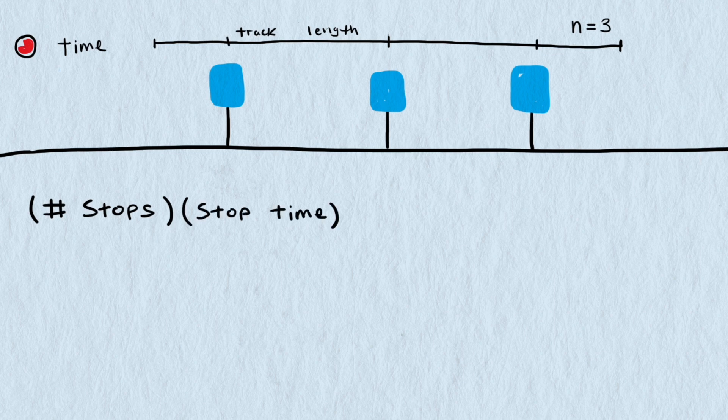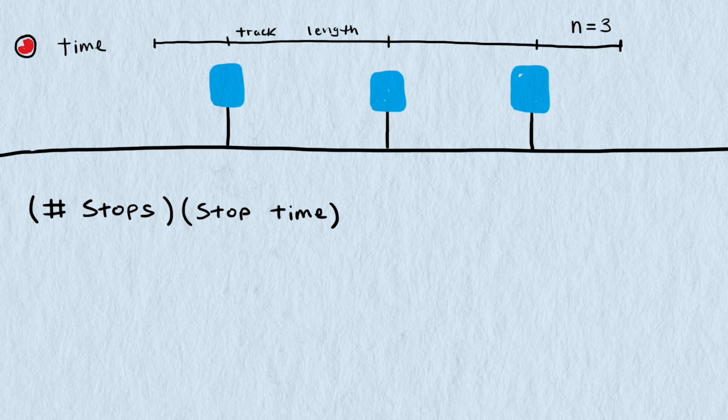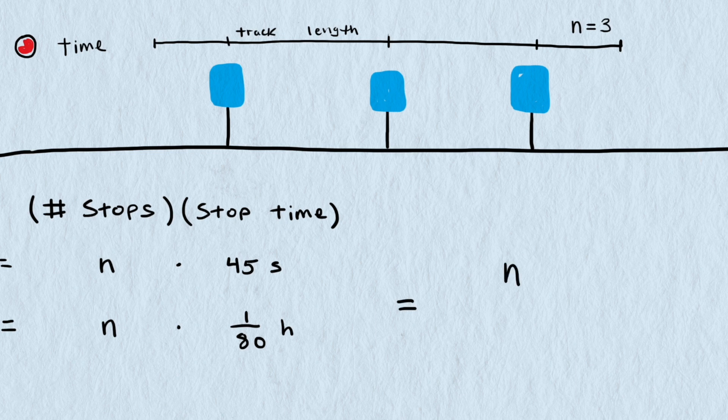For stopping time we take the number of stops and multiply it by our average stop time of 45 seconds per stop. This assumption is in seconds but we calculated walking time in hours so we need to convert this to hours. 45 seconds is equal to 1/80th of an hour so stopping time will be 1/80th times n.